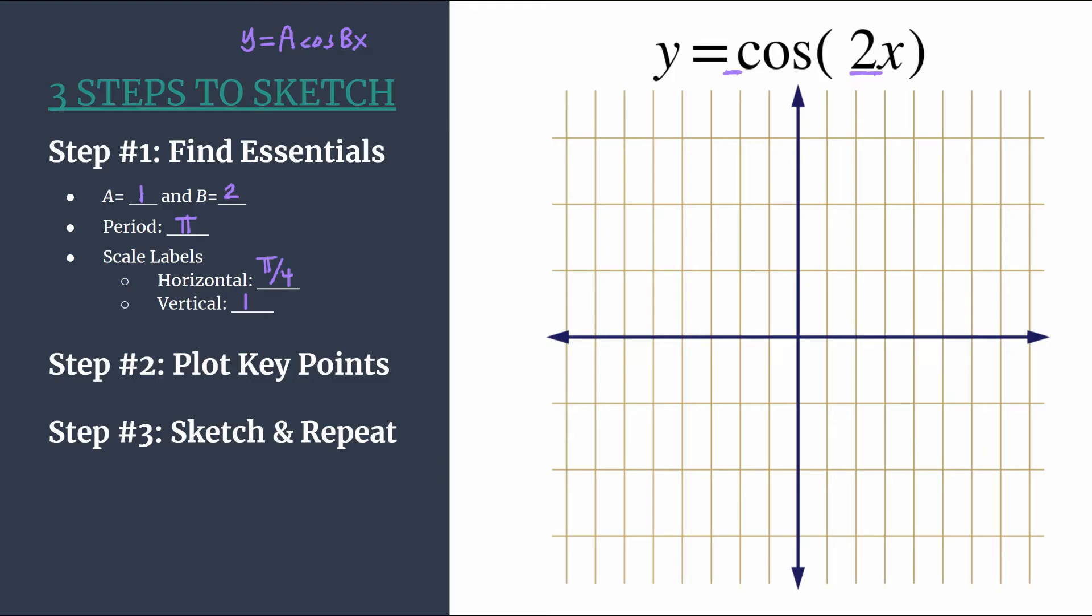So we're counting by pi over 4. So count 1 pi over 4, 2 pi over 4, which simplifies, 3 pi over 4, 4 pi over 4. Your fourth tick mark using this method should always match your period. That's a great double check. So we'll stop. Pi, that makes sense.